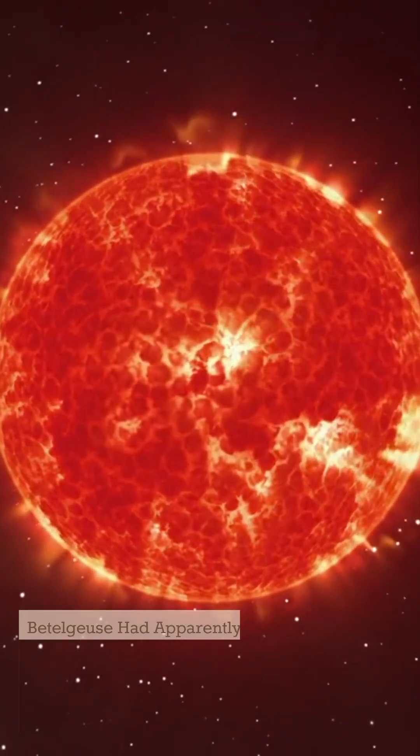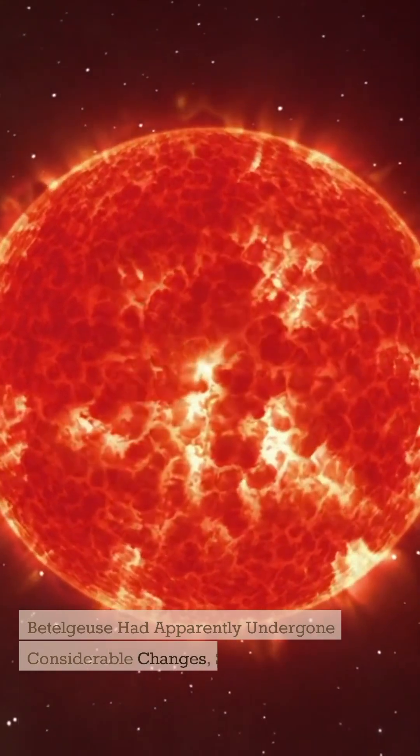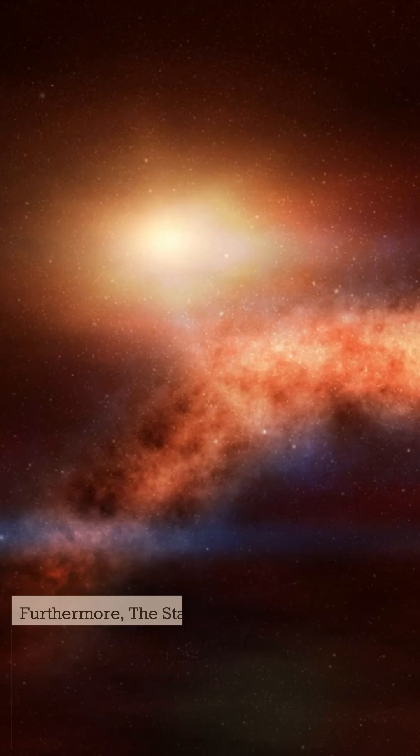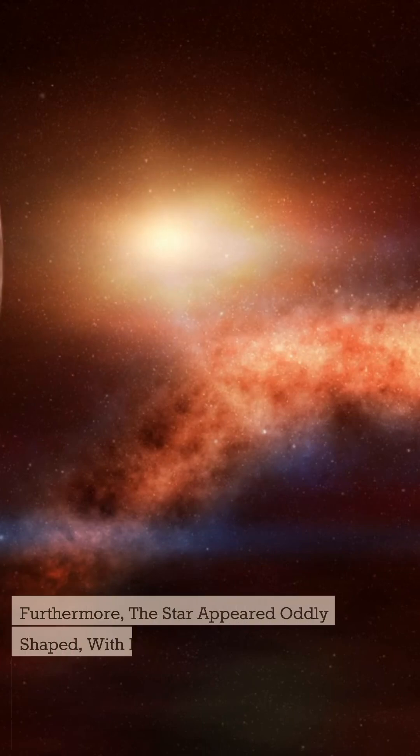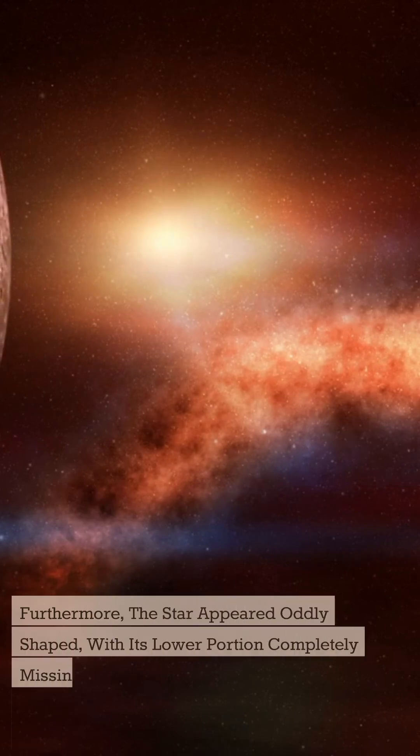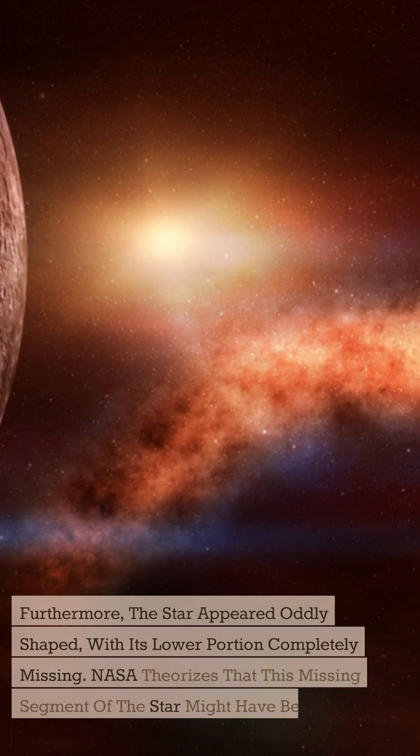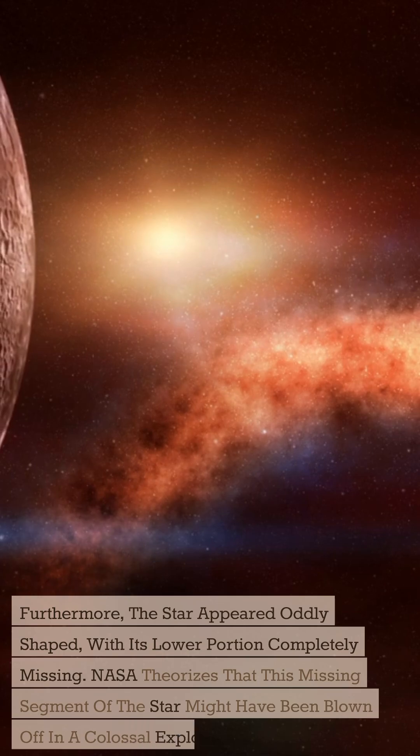Betelgeuse had apparently undergone considerable changes, swelling significantly in the months prior to the end of 2019. Furthermore, the star appeared oddly shaped, with its lower portion completely missing. NASA theorizes that this missing segment of the star might have been blown off in a colossal explosion.